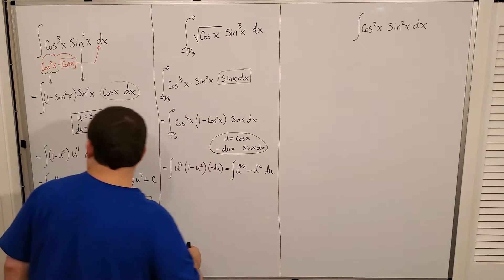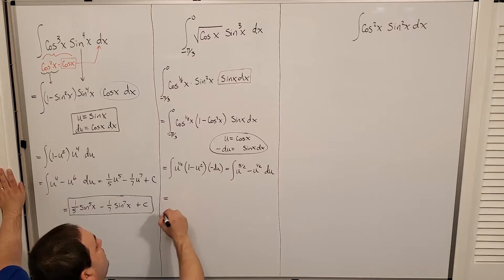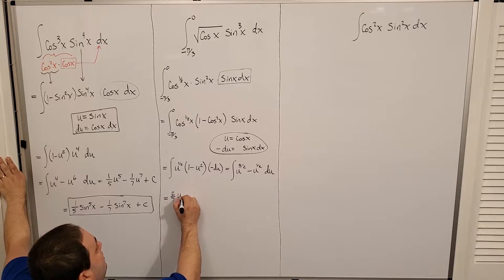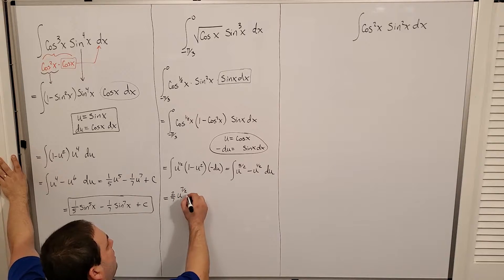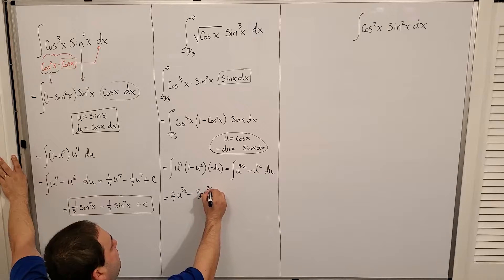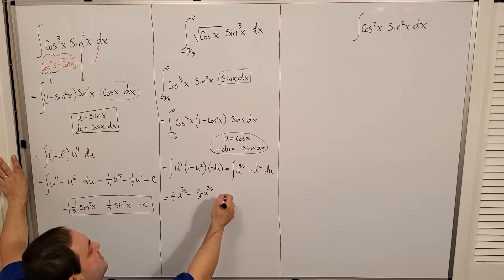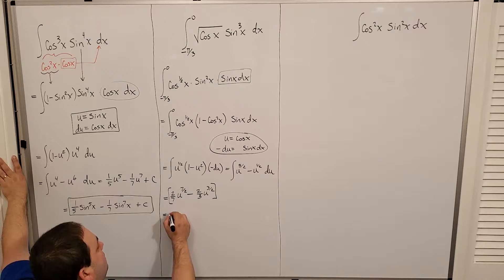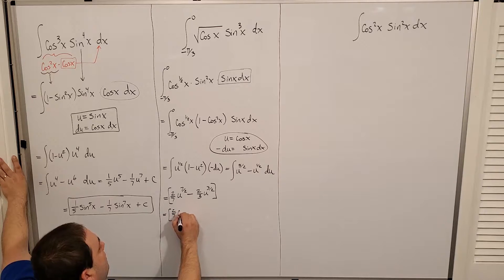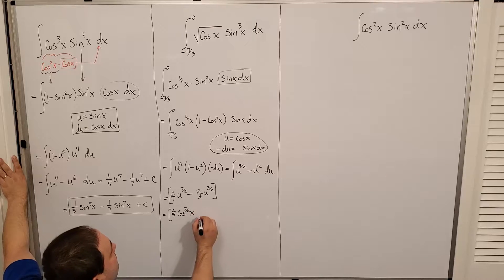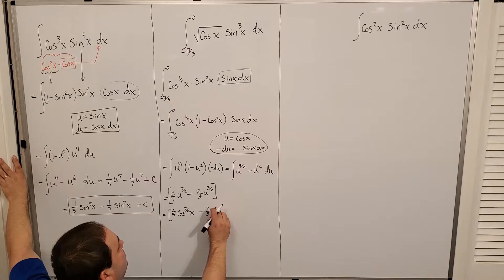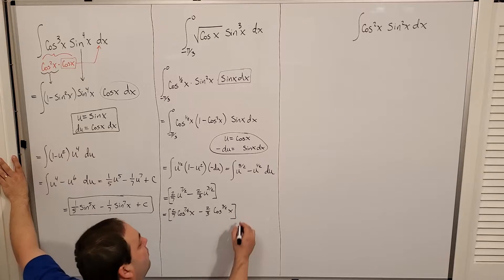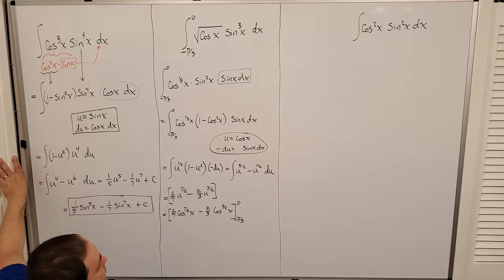Applying the anti-derivative rules gives (2/7)u to the 7/2 minus (2/3)u to the 3/2. Substituting back u equals cosine x, I have (2/7)cosine to the 7/2 x minus (2/3)cosine to the 3/2 x, evaluated from negative π/3 to 0. When I plug in 0 for cosine x, I get 1, so the first evaluation gives just (2/7) minus (2/3).